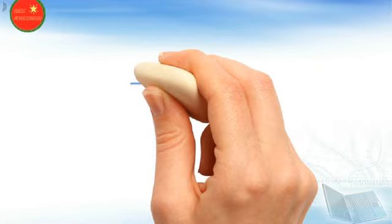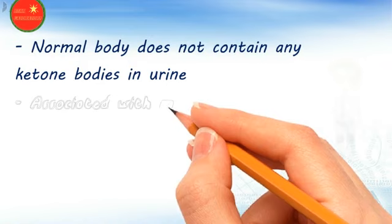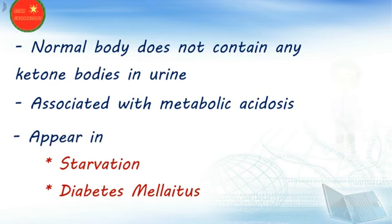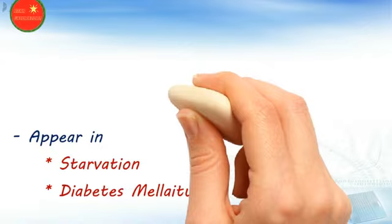Normal urine does not contain any ketone bodies. Ketone bodies are associated with metabolic acidosis and can appear in starvation as well as in diabetes mellitus. Starvation is a non-pathological condition, while diabetes mellitus is a pathological condition.